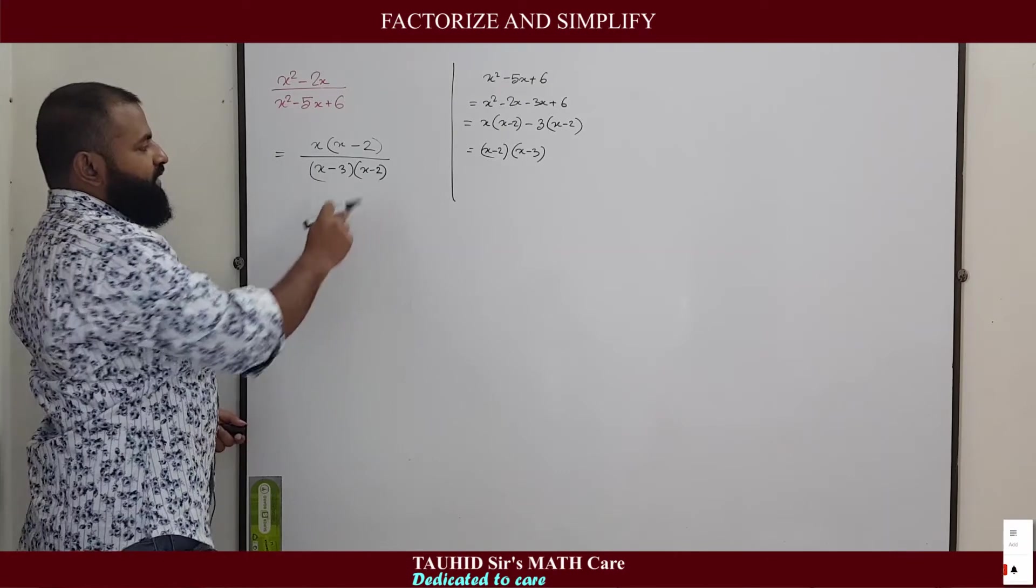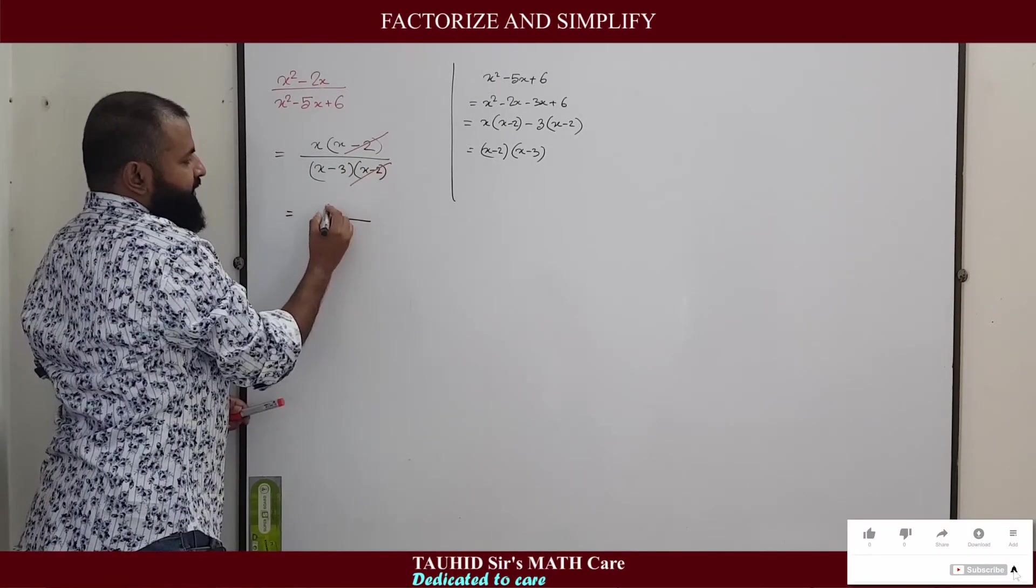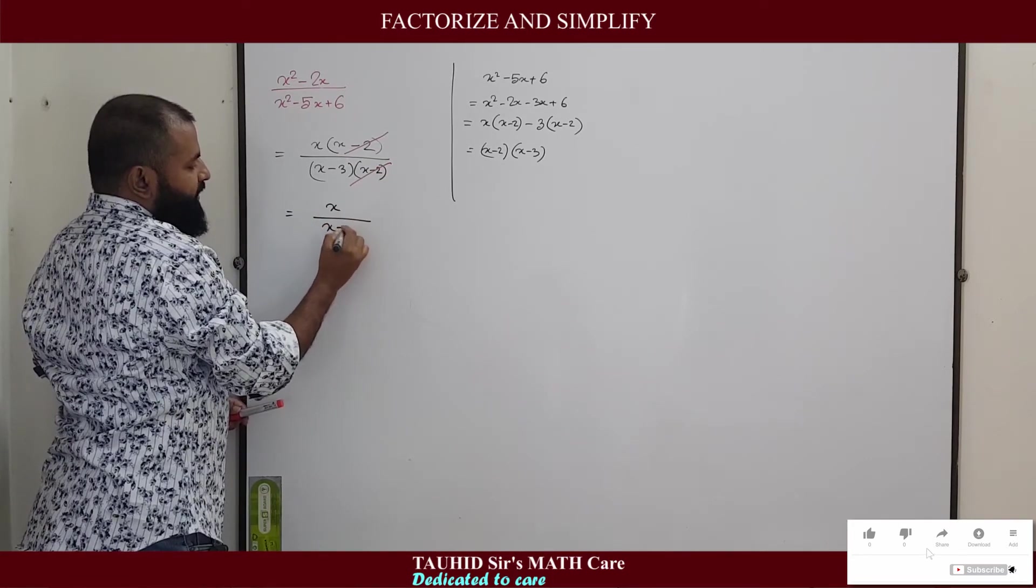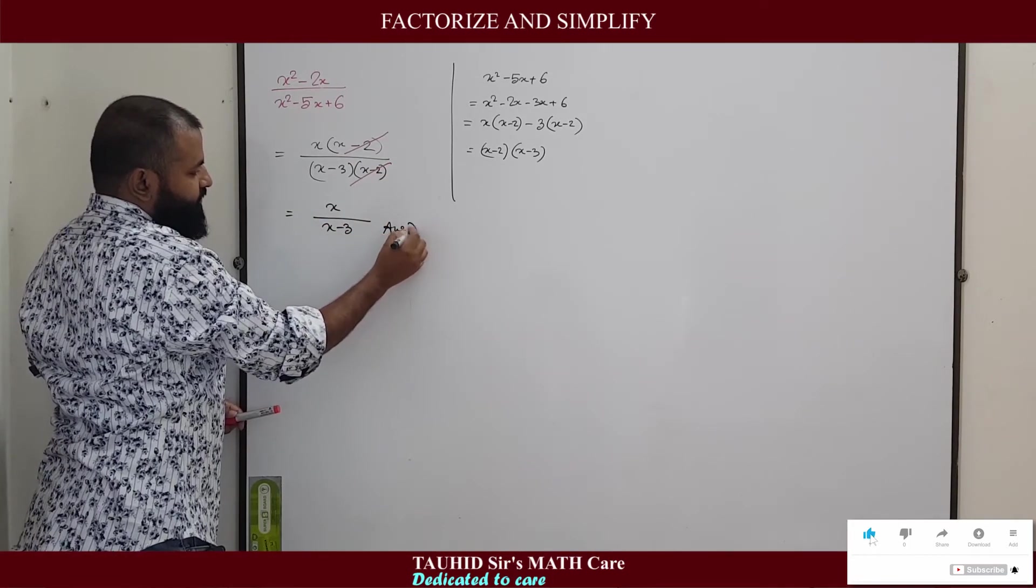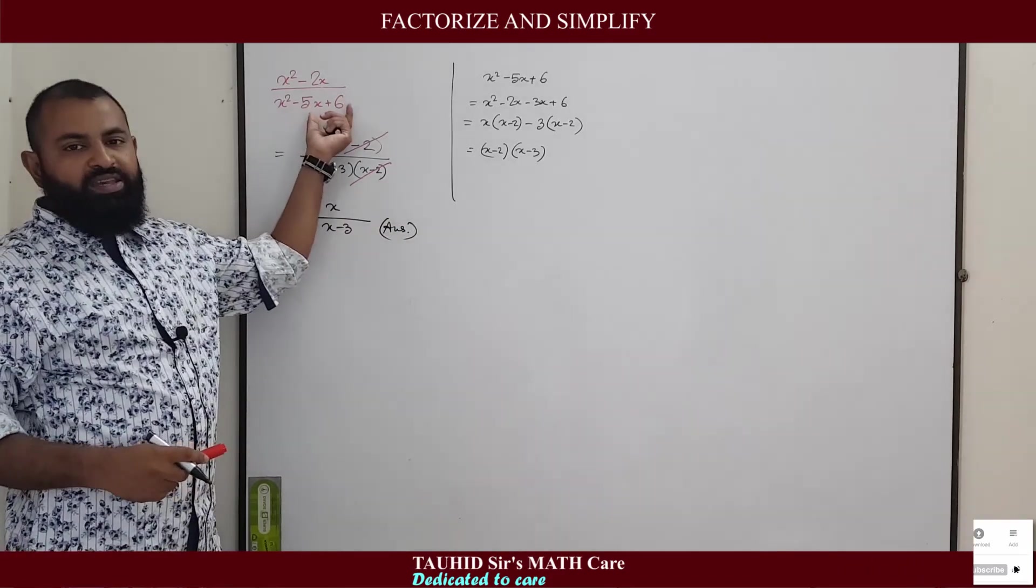Now we can divide this (x - 2) by this (x - 2). So the answer becomes x divided by (x - 3). This is the simplified form of this expression.